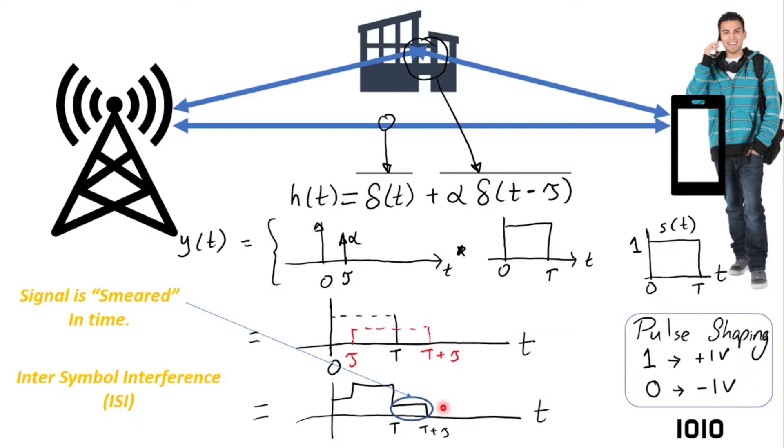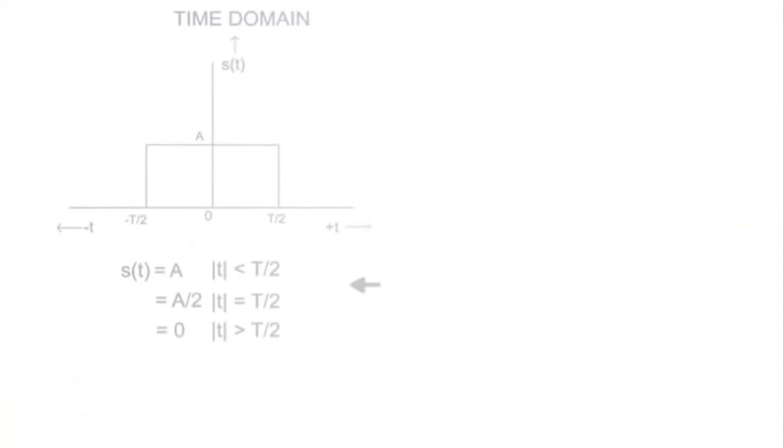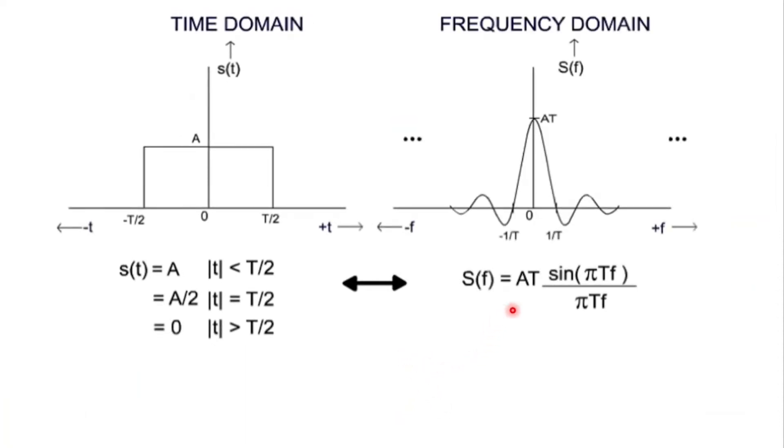Now for pulse shaping we have used a rectangular pulse here. Let us further analyze and see if this pulse is of appropriate choice. Now for the rectangular signal S of t, we consider its Fourier transform which is simply a sinc function. So sinc function in frequency domain has a bandwidth of infinity which is undesirable and we need to operate in our licensed and allowable spectrum band.